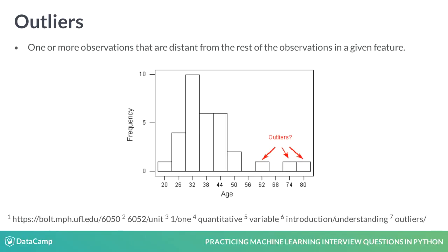Outliers are defined as one or more observations that are distant from the rest of the observations in a given feature. When looking at a histogram of a feature, outliers tend to show up in the tails, as you see in this image.